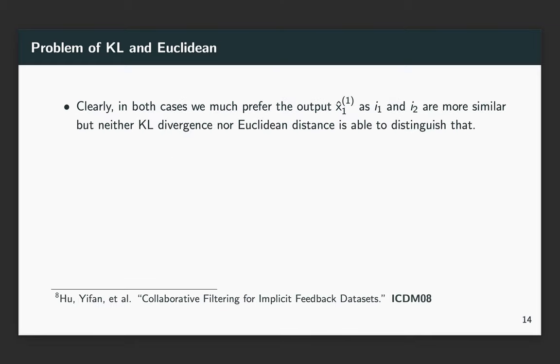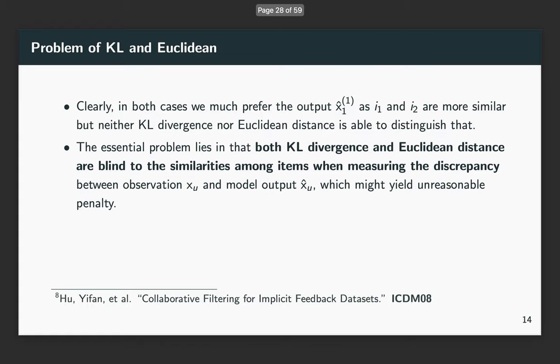It is very clear that we actually might prefer x_1-hat_1 since i1 and i2 are more similar, but neither KL divergence nor Euclidean distance could differentiate that. The essential problem is that both KL divergence and Euclidean distance are agnostic to the similarities among items when measuring the discrepancy between two distributions.